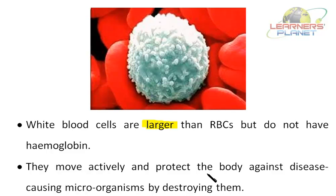White blood cells are of various kinds. Some phagocytes ingest invading bacteria and protect the body from diseases. They also help to repair injured tissues whenever we are wounded. Other white blood cells produce antibodies which provide immunity by binding to disease-causing bacteria and destroying them. Yet others can kill cells which are infected by viruses.